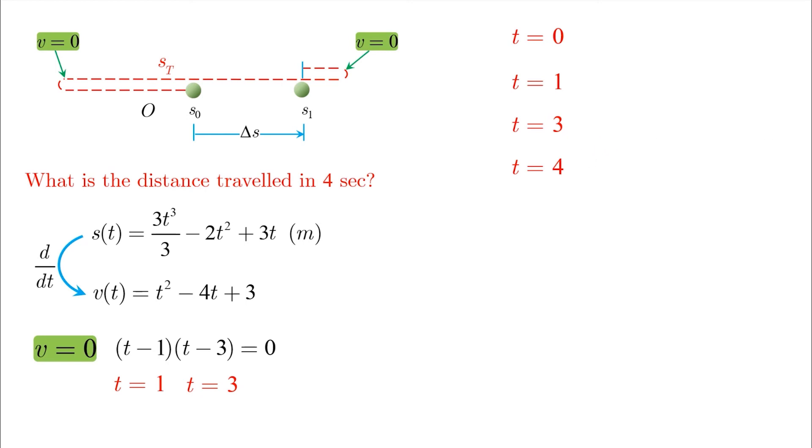Now at t equals zero, if you substitute back in s of t, you will get s equals zero, and this is our initial condition. At t equals one, we calculate s again and find it to be four over three. This means that the particle moved from s equals zero to s equals four over three.